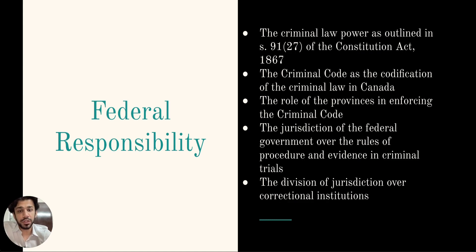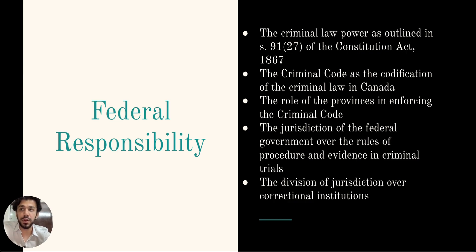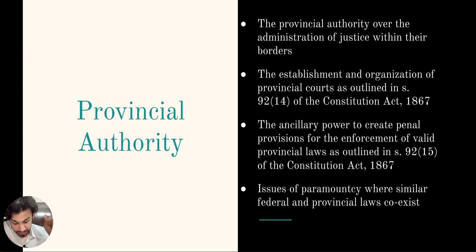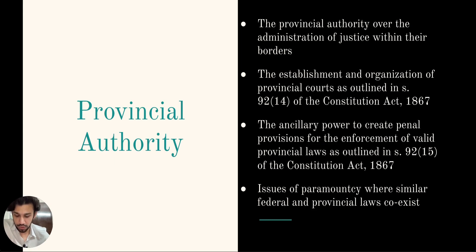The division of jurisdiction over correctional institutions is also divided between the federal and provincial governments. The provinces have jurisdiction over prisons which hold offenders sentenced to imprisonment for less than two years. For offenders with an imprisonment sentence of more than two years, the federal government has jurisdiction over their penitentiaries. The provinces have an ancillary — which is a secondary power — to create penal provisions for the enforcement of valid provincial laws, as outlined in Section 92(15).